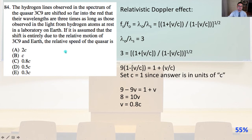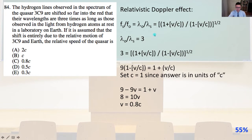Number 84. The hydrogen lines observed in the spectrum of the quasar 3C9 are shifted so far into the red that their wavelengths are three times as long as those observed from hydrogen atoms at rest in a laboratory on Earth. Assuming the shift is entirely due to relative motion, the relativistic Doppler effect gives: frequency of sender over frequency observed equals lambda observed over lambda emitted, equal to the square root of the quantity 1 plus V over C divided by 1 minus V over C.